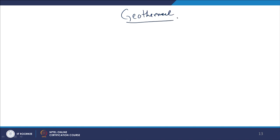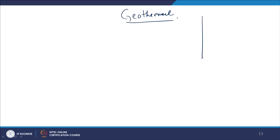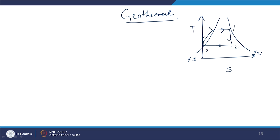The next topic is geothermal power. Geothermal plants work on the Rankine cycle — converting heat to work. These plants have turbines, condensers, and pumps. The only difference from a conventional plant is that heat addition does not take place in a boiler; heat is extracted from geothermal energy. There are different types of geothermal power plants: dry steam-based, wet steam-based, and hot water-based.